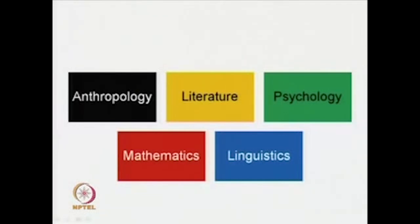The structuralist school is not one that is only to do with cultural studies as a discipline — it is applied to many fields. It suffices for us to understand the scope: it is applicable to anthropology, literature, psychology, mathematics, linguistics, maybe to computer science, to biology, and some strong proponents may claim it applies to all knowledge forms that humankind has ever produced.